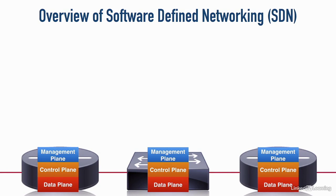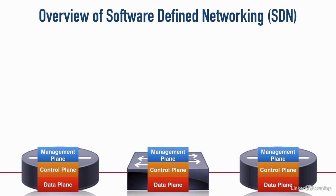Let's consider the traditional architecture of our network infrastructure devices, like routers and switches. They all have a data plane, and the data plane is where we carry the data. The data plane is concerned with getting packets or frames in one interface and forwarding them out the appropriate exit interface.